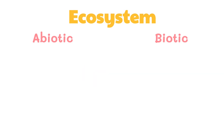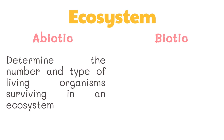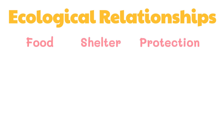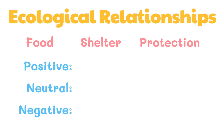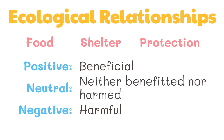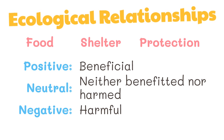Abiotic factors determine the number and type of living organisms surviving in an ecosystem, while living organisms may be directly or indirectly related to other organisms. Interactions and relationships exist in an ecosystem in the search for food, shelter, and protection. These interactions may have positive, neutral, or negative influences on the interacting populations, and are called ecological relationships.